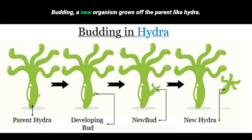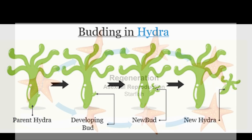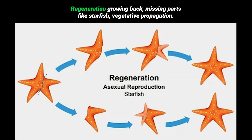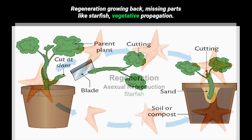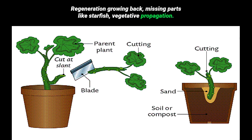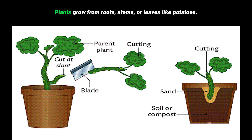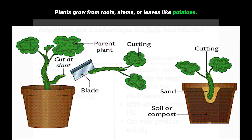Other types of asexual reproduction include budding, where a new organism grows off the parent, like hydra; regeneration, where an organism grows back missing parts, like starfish; and vegetative propagation, where plants grow from roots, stems, or leaves, like potatoes.